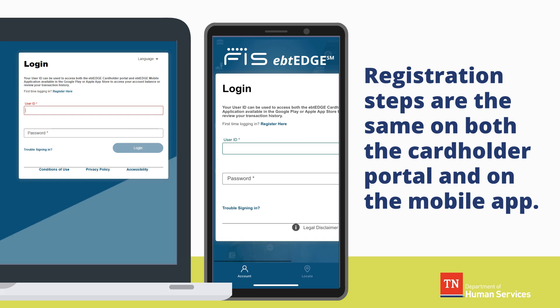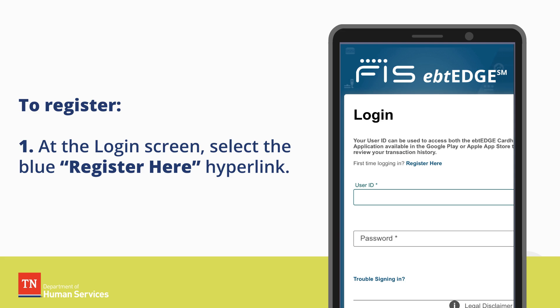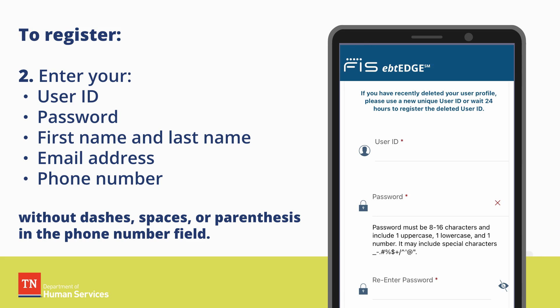Registration steps are the same on both the cardholder portal and on the mobile app. To register, step one: at the login screen, select the blue register here hyperlink. Step two: enter your user ID, password, first name, last name,